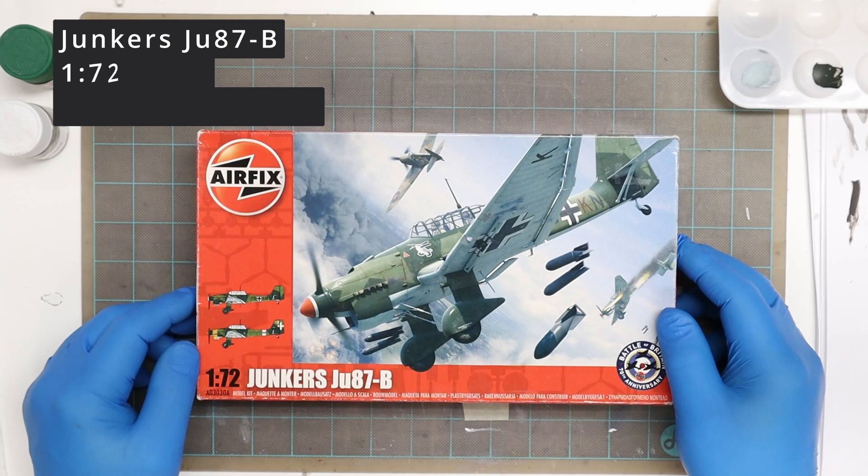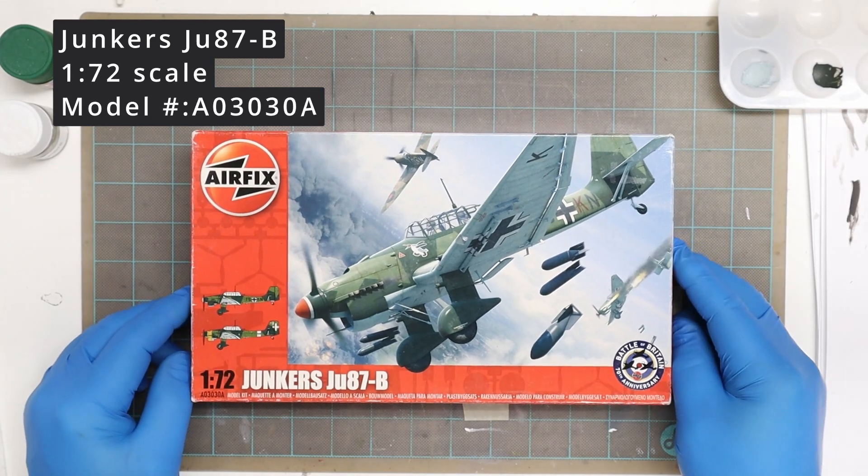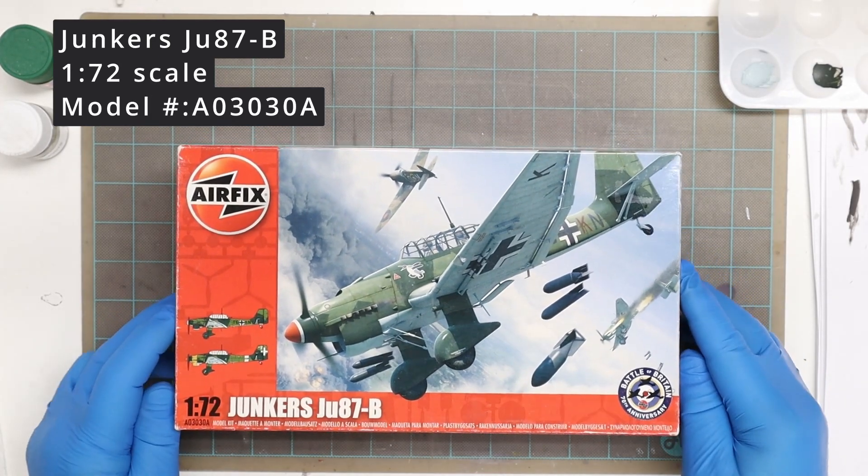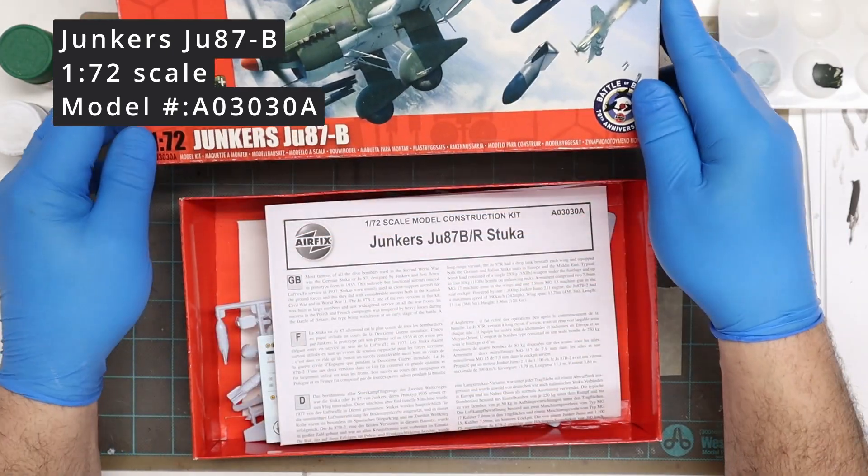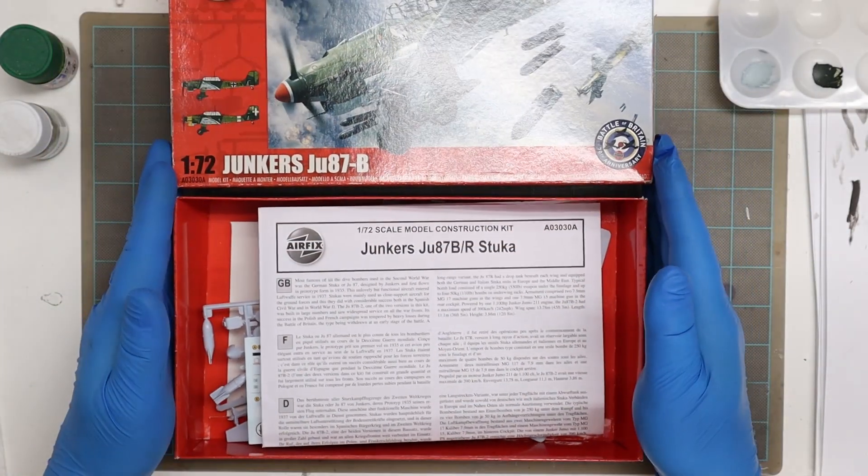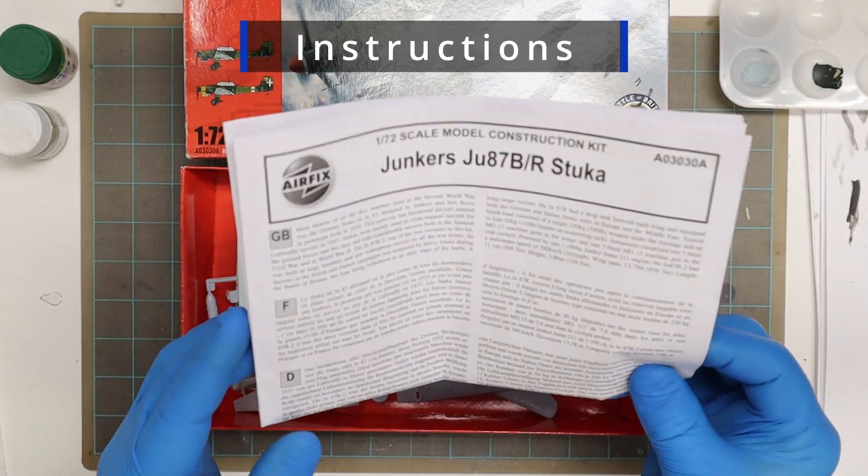Alright, this is the Junkers Ju87B from Airfix in 1 to 72 scale. The model number is A03030A. Looking at the instruction sheet here.